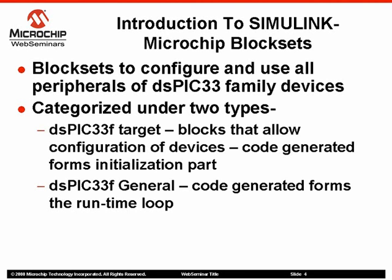These block sets appear under two main categories. The first is DSPIC 33F Target. These blocks allow you to configure various peripherals for initialization purposes. You can configure them by double-clicking on the blocks, and these configurations would reflect in the runtime code generated from the models. There are also blocks that allow you to configure various peripherals for runtime purposes, which are similarly configured by double-clicking, and those configurations reflect in the runtime code as well.